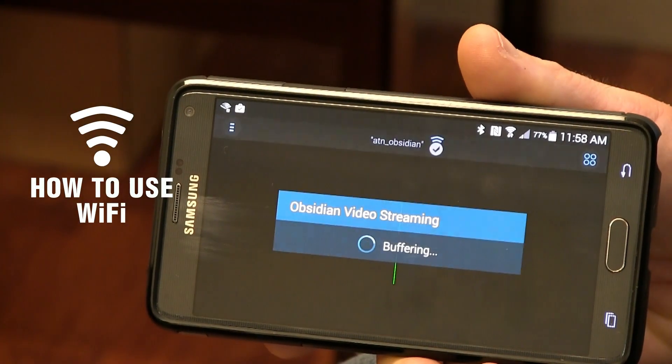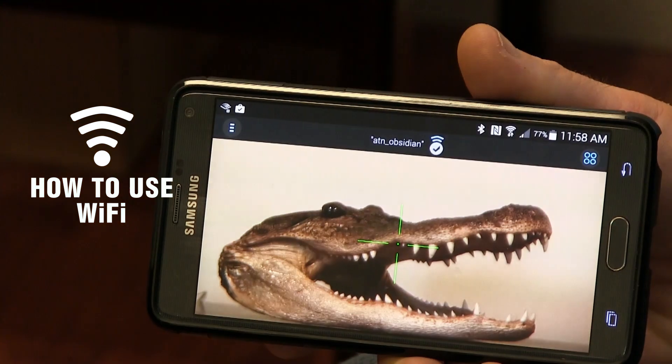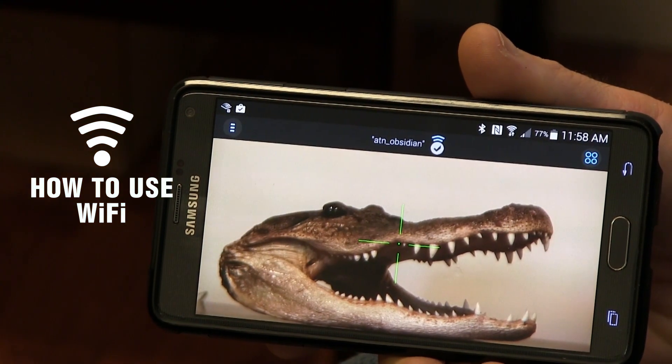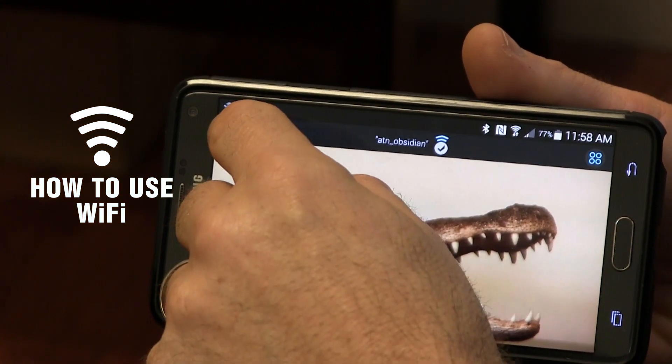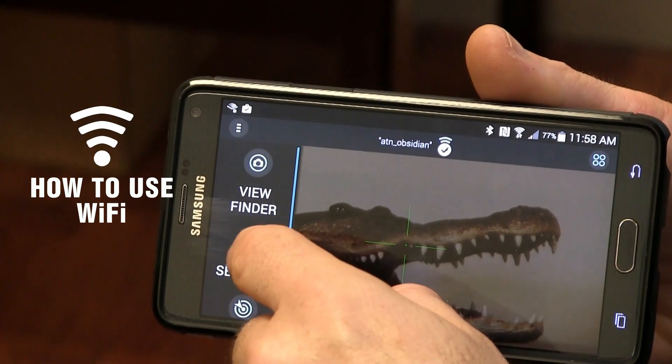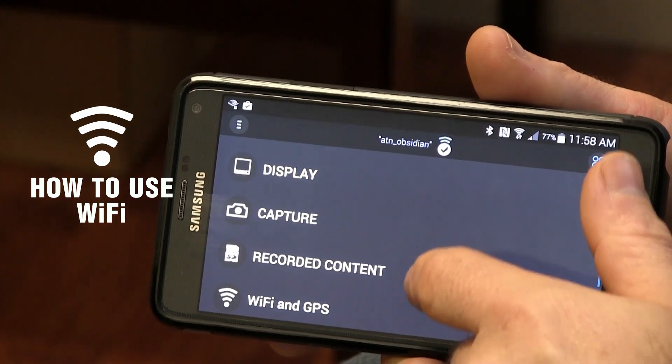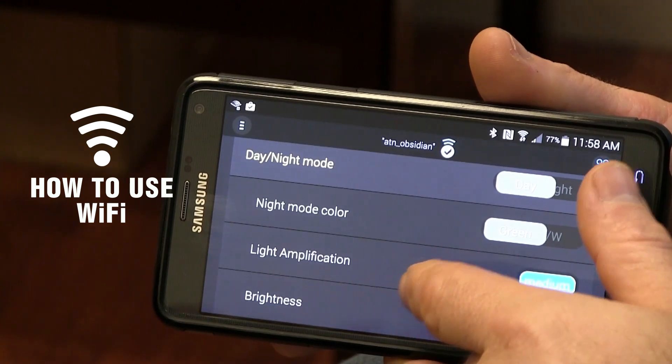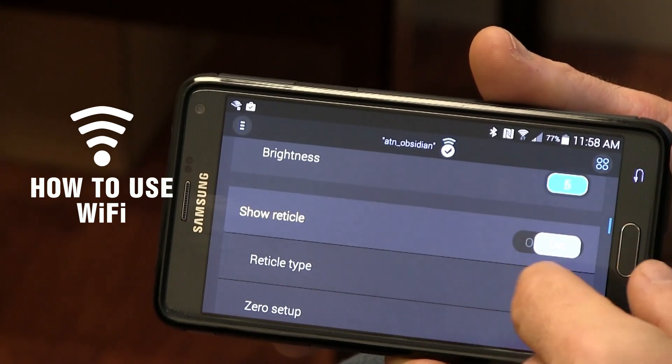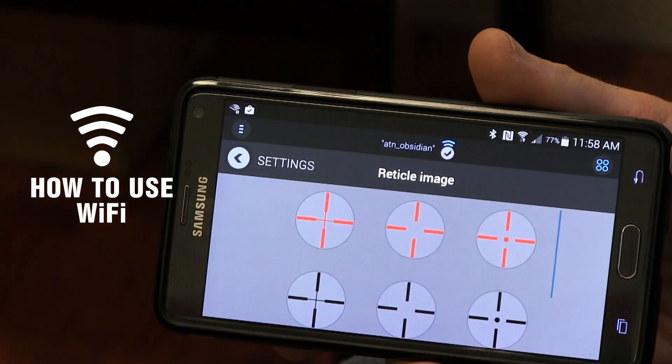Once you connect to the app, you can view the preview of your scope in real time, or control some of the basic functions of your scope, including reticle pattern, color, and style.